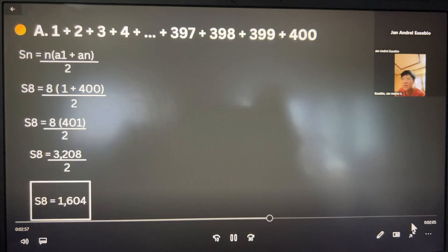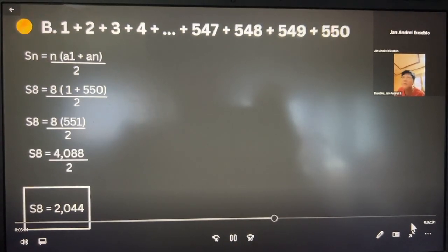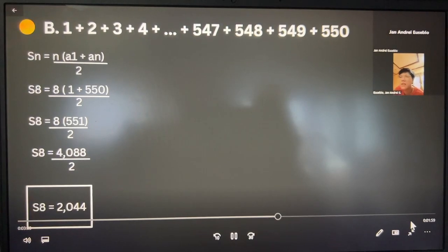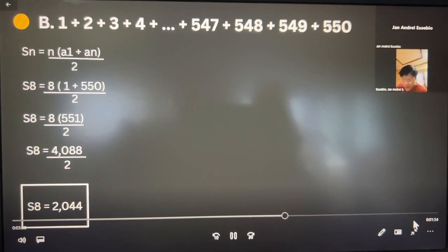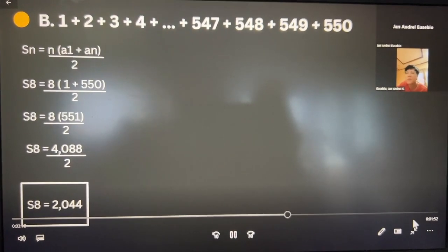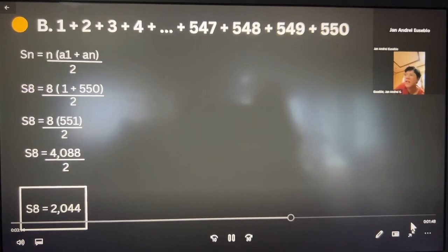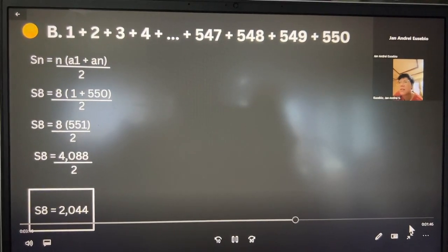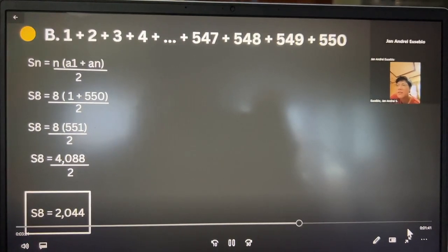So same procedure for B and C, we'll use this same formula. For letter B, this is the given order of numbers. So same procedure: S sub 8 equals 8, because 8 is the count of numbers given again, and then in parenthesis bracket, 1 plus 550.